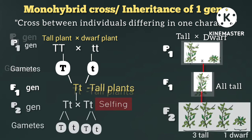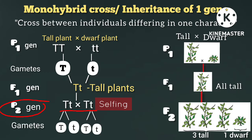This is the F1 generation. Next, the F1 tall plants undergo self-pollination — selfing. This produces a P2 generation. P2 is the second generation parents. The F1 heterozygous plant (Tt) produces gametes.